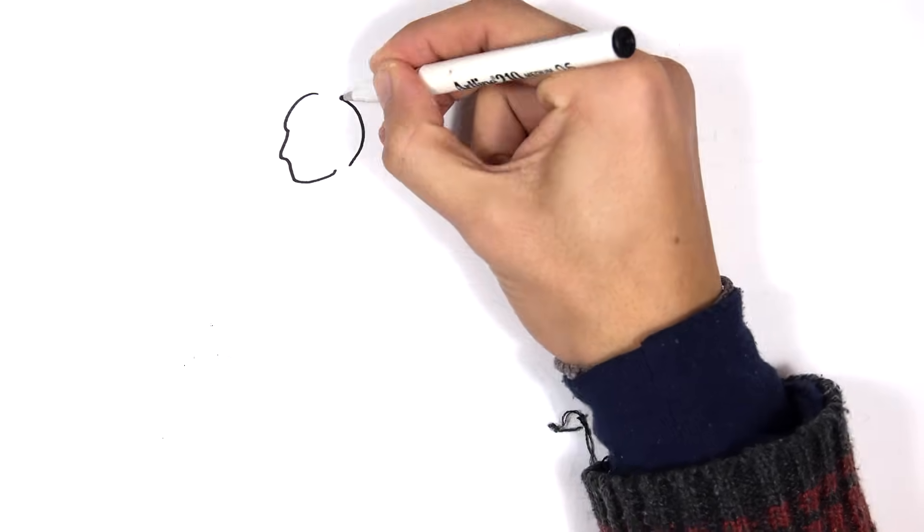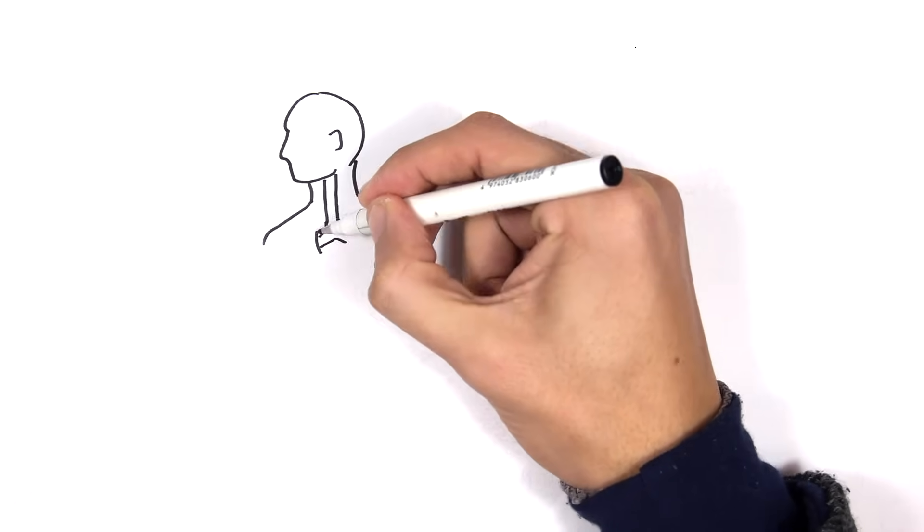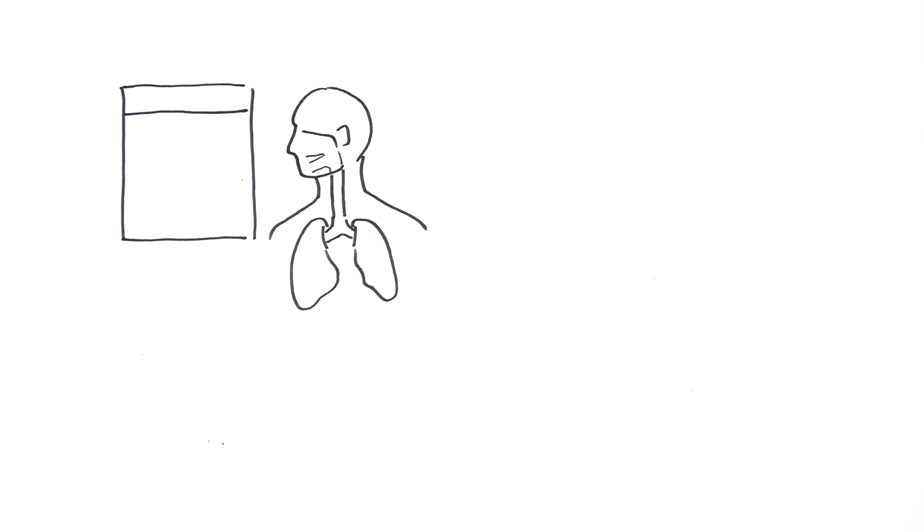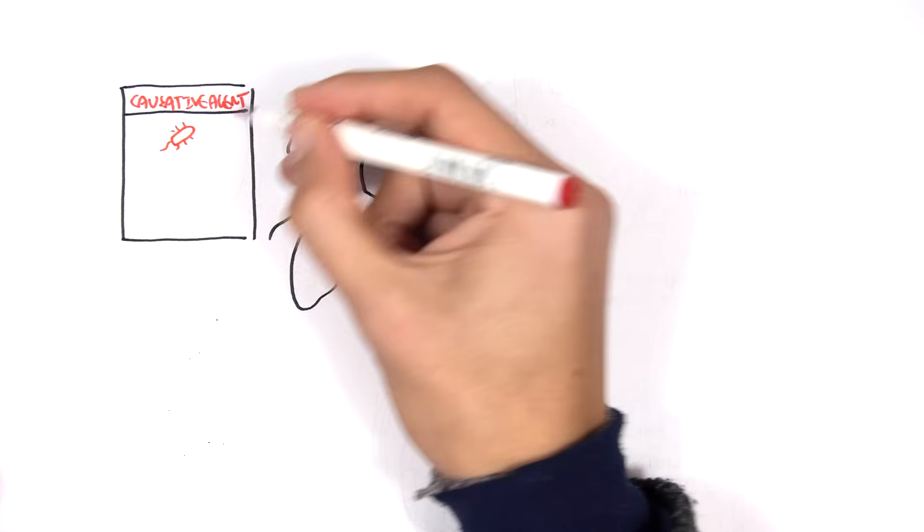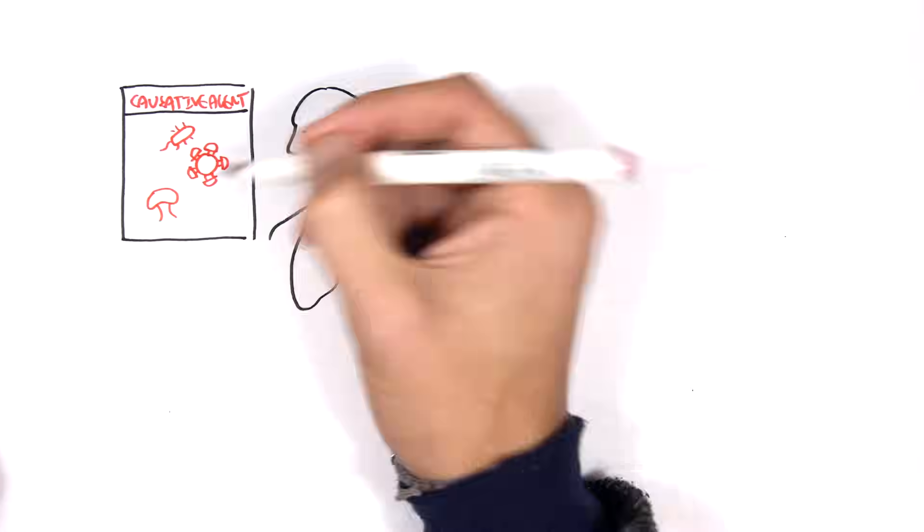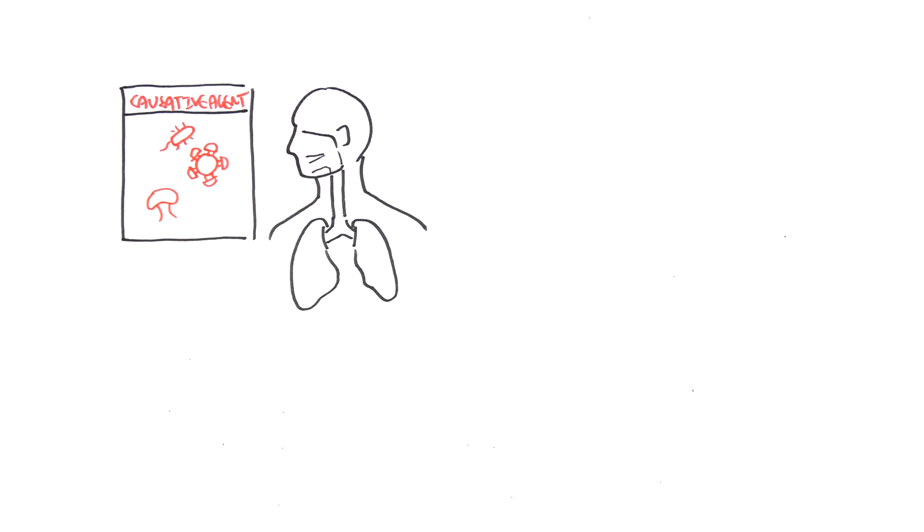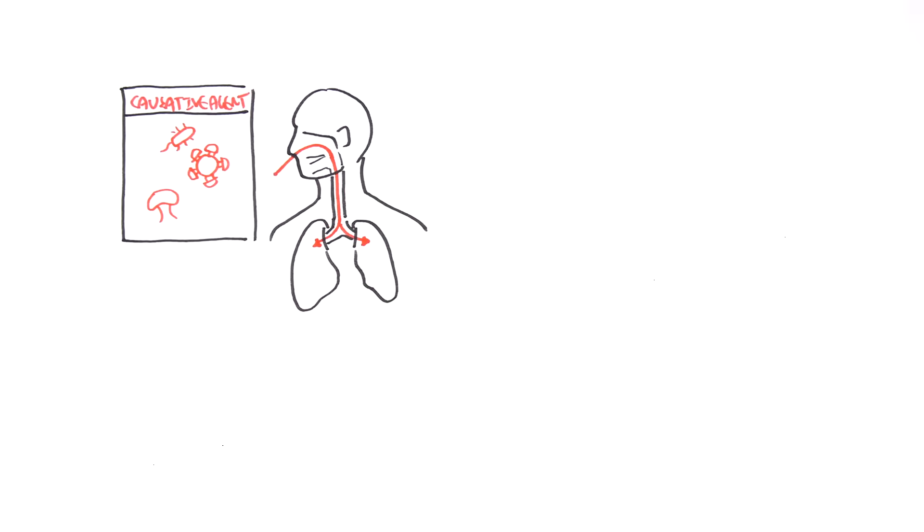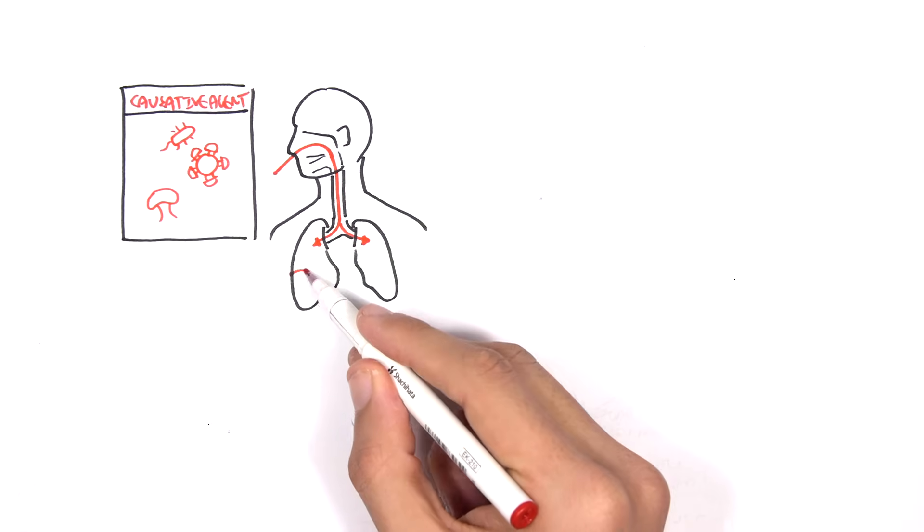Okay, so now let us look at quickly how the different causative agents that we talked about actually cause pneumonia. So we look at mainly bacterial, viral, and fungi which can enter, infect the respiratory tract through inhalation of these foreign particles for example. So they enter the lungs. Now let us look at each one of these individually.